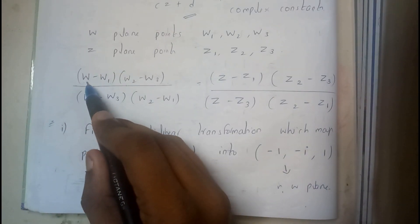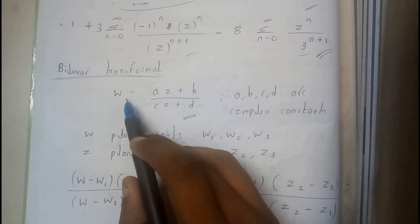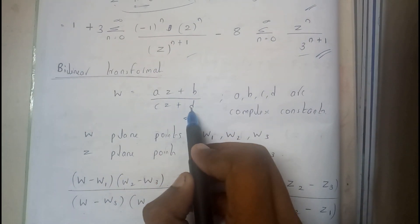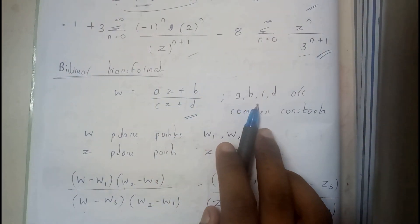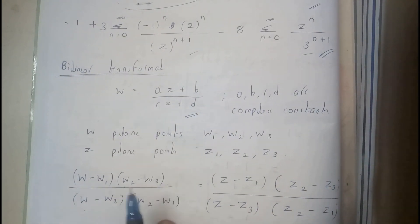Somehow you will be managing to find the value of w so that it will be in the form of w equals (az + b)/(cz + d), where z will be the term and there will be some coefficients. Here a, b, c, d are complex constants.